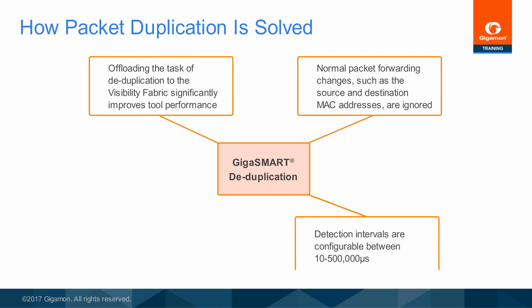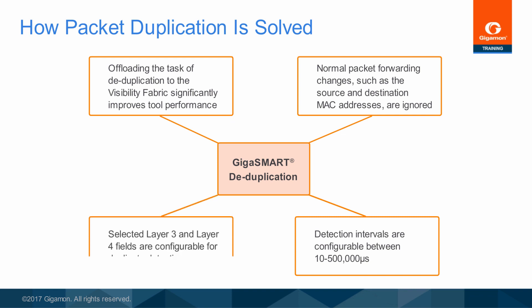The GigaSmart deduplication application can tally or remove any duplicate IP packets detected within a configurable interval of up to 500,000 microseconds, which is equal to 500 milliseconds. It even permits selection of additional Layer 3 and Layer 4 fields to be included with or excluded from the duplicate detection process. This gives you even more granularity and control over duplicate detection, further improving analysis results.